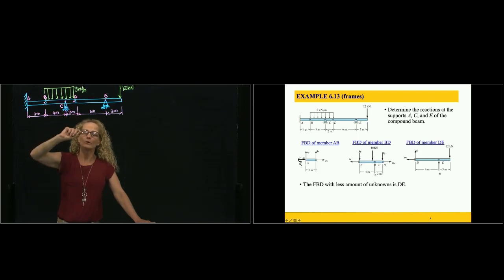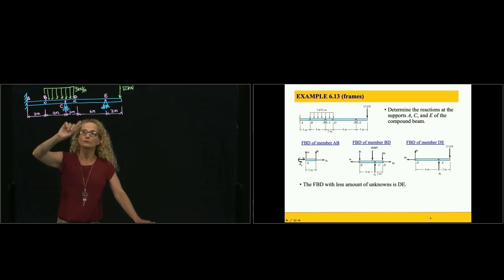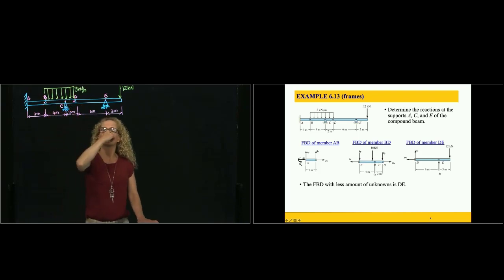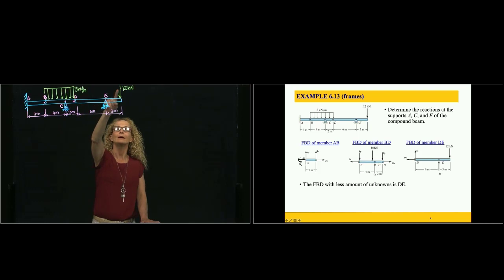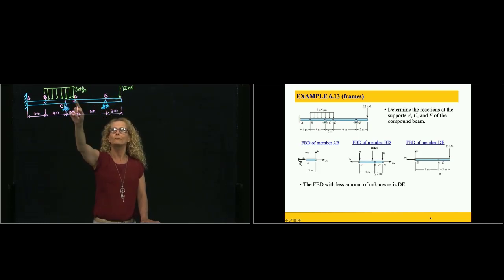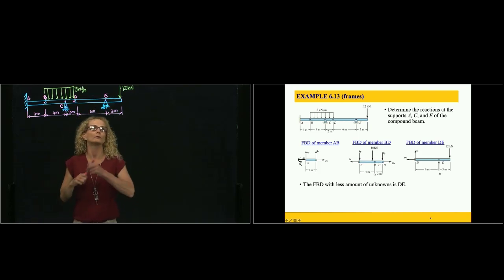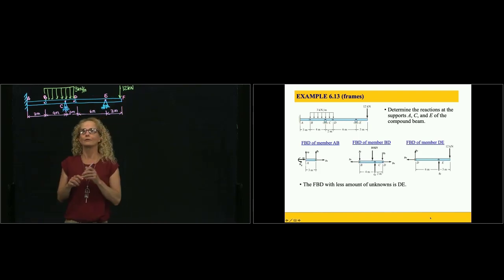Remember that a roller only restricts displacement in the vertical direction, so we will have only one reaction. We have a distributed load, and then we have another roller at E, and a concentrated load at the end of beam DF. We can call this beam EF.